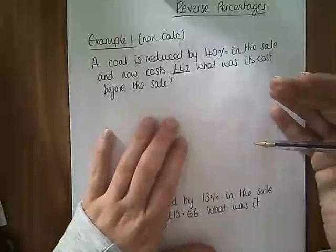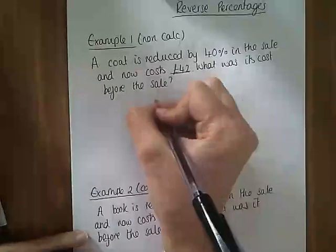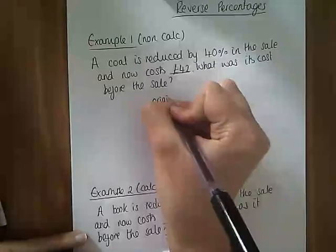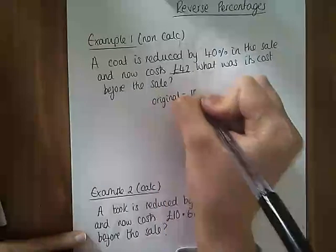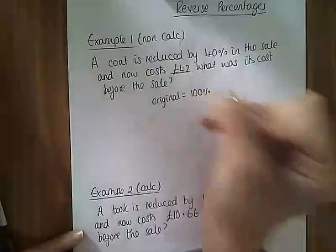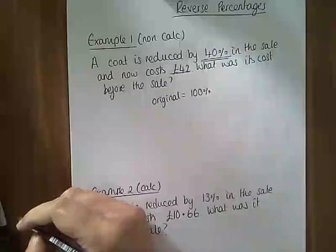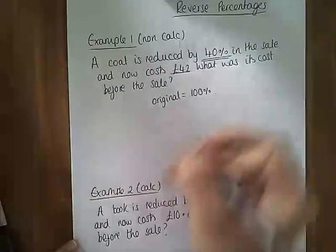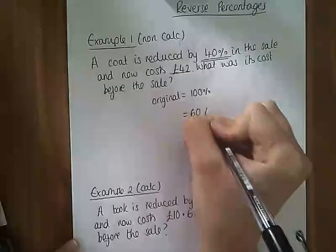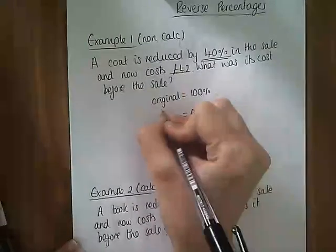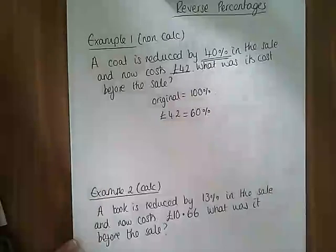Okay, so we are going to say that our original amount was 100%. Okay, it's worth 100%. If we reduce that original amount by 40%, what percent are we left with? We are left with 60%. So this £42 is equivalent to 60%.